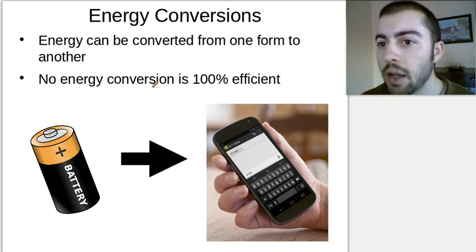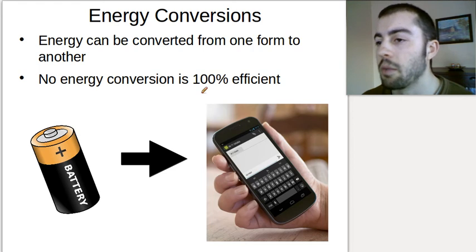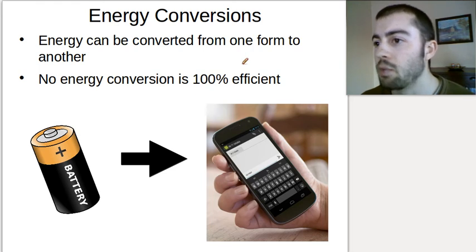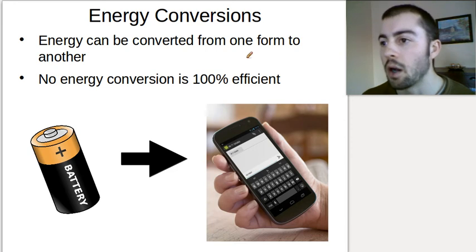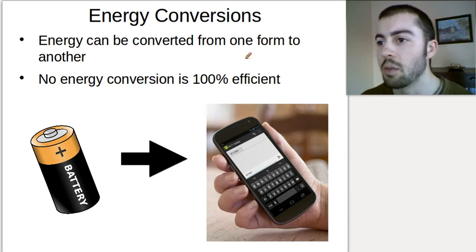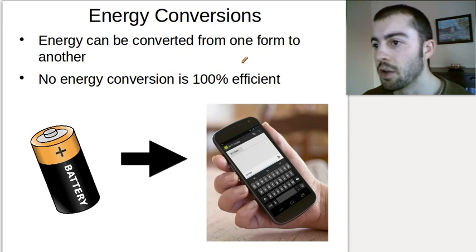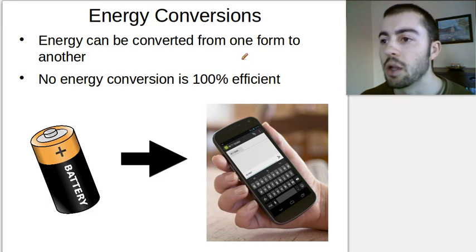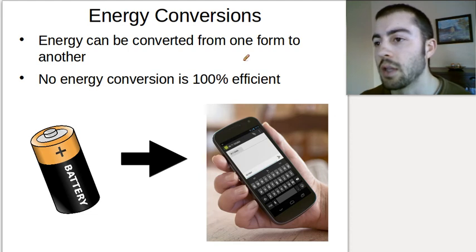No energy conversion is 100% efficient. This is very important to understand — if we're converting, let's say, kinetic to potential energy, in real life we're never going to get all of the energy that we started with. Energy is always going to be lost to one source or another, usually as heat. It could be lost to friction, air resistance, or a bunch of different things.